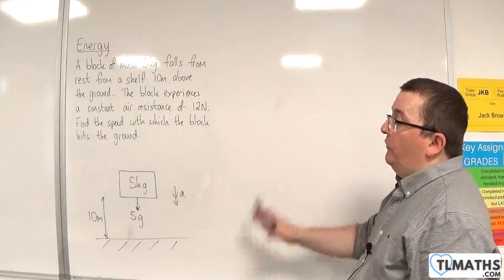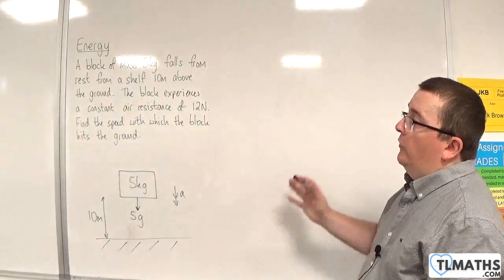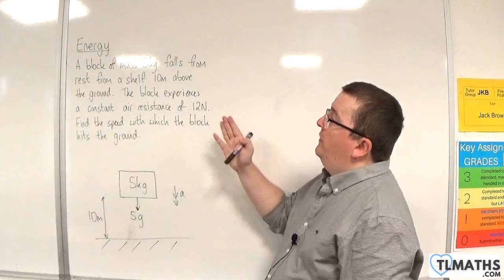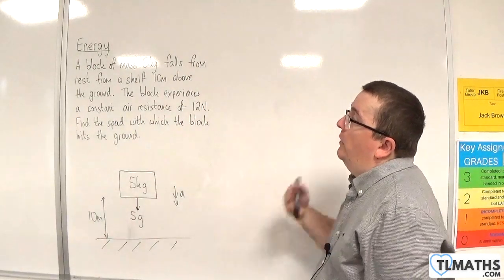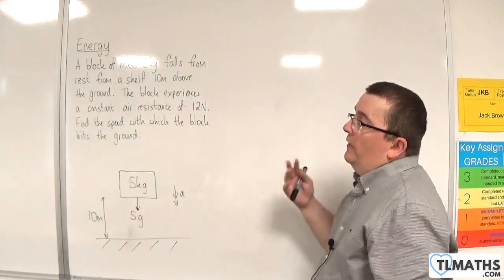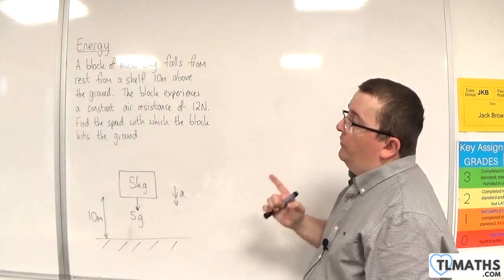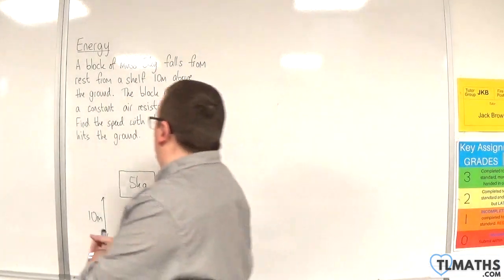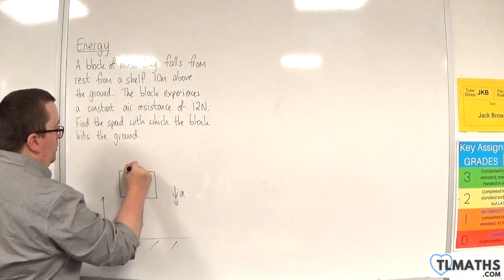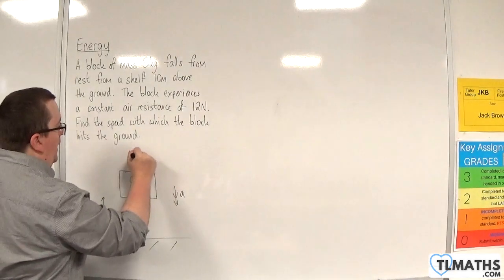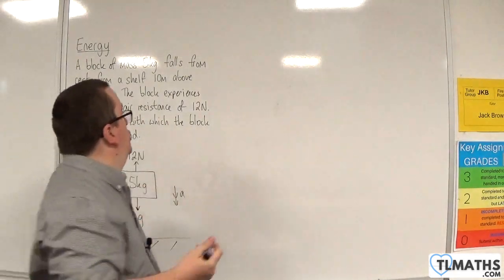So in this video, we're looking at a very similar problem to last time. We've got the same mass block, 5 kilos, falls from rest from a shelf 10 metres above the ground. So that's the same scenario as before, but now the block experiences a constant air resistance of 12 newtons. So we can have a 12 newton force acting against the direction of motion.